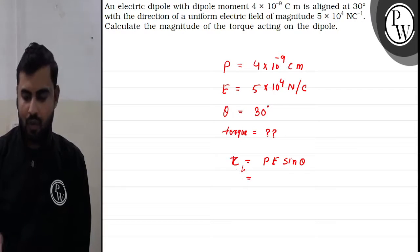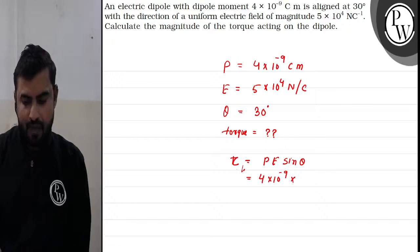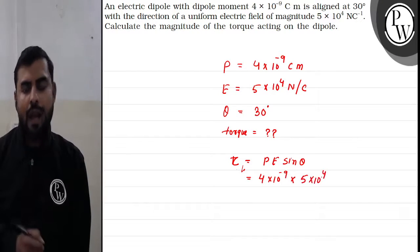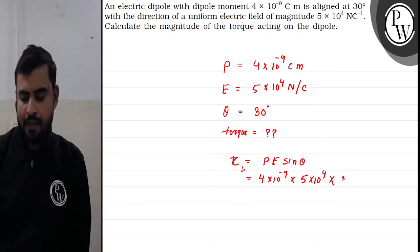The value of P is 4×10^-9, E is 5×10^4, and θ is 30 degrees.